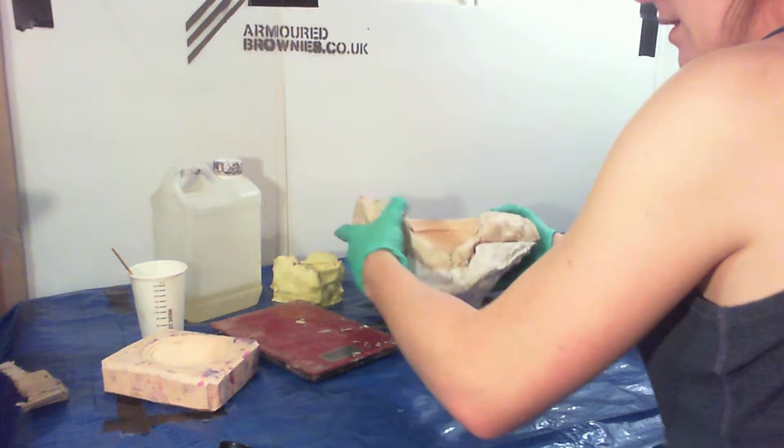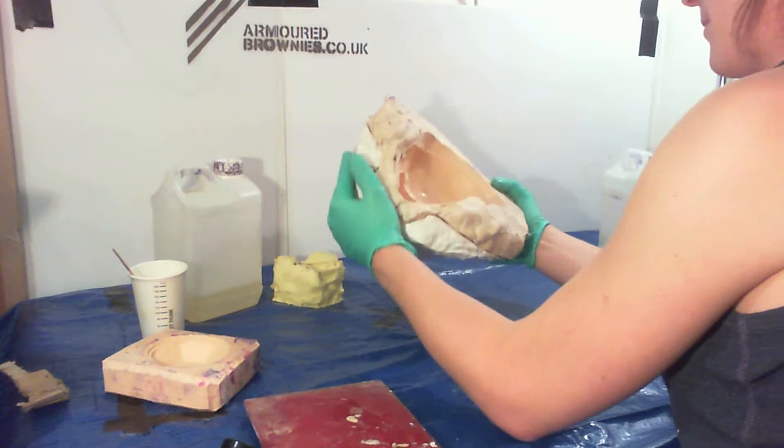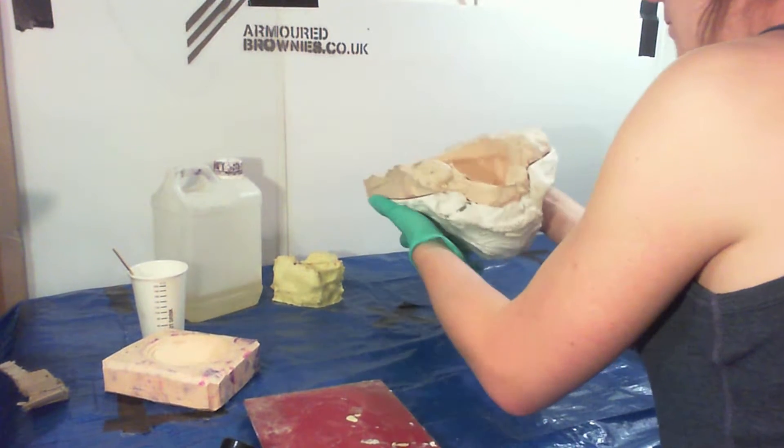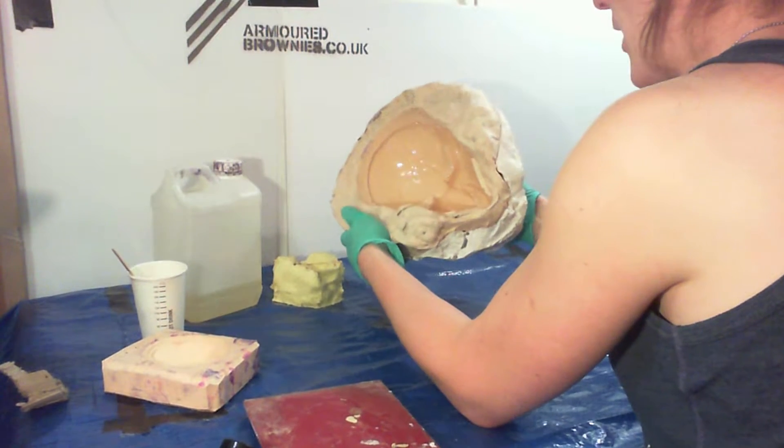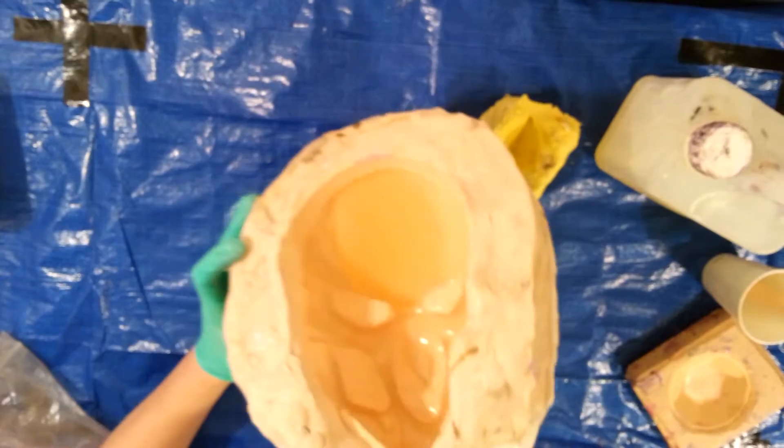Now you're rotocasting. You need to slosh it around the mold, up the walls, paying careful attention to the very edges of your mold. When the first layer is going in, you're contending against surface tension, but once all the surfaces are wetted with the resin, you're able to build it up slowly.